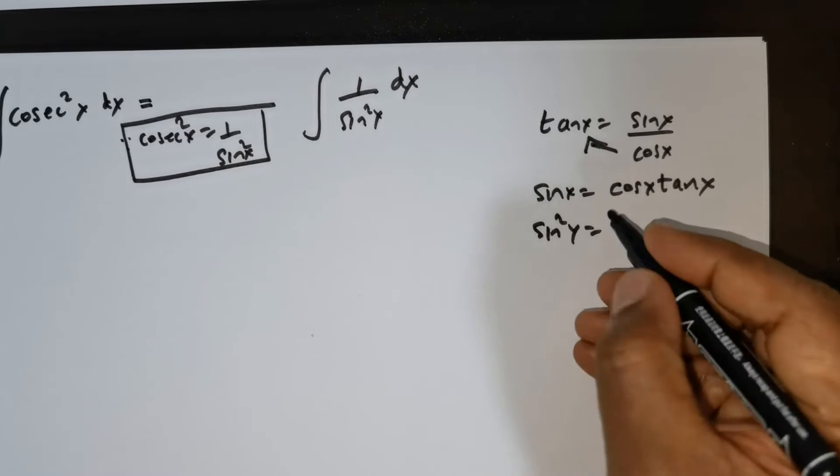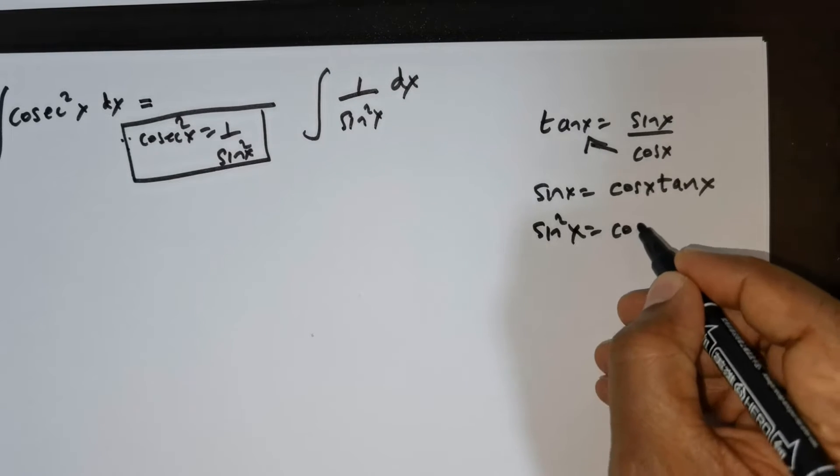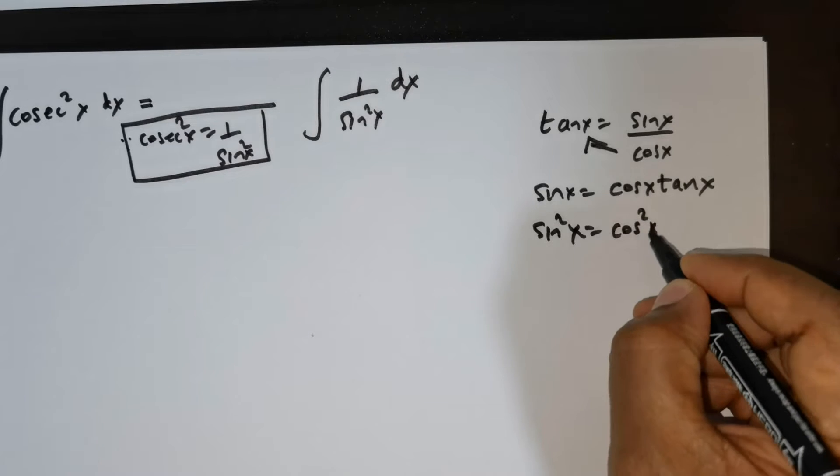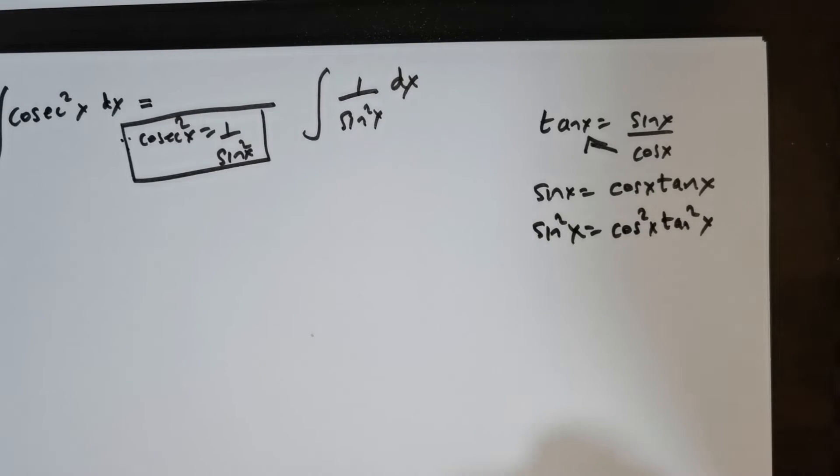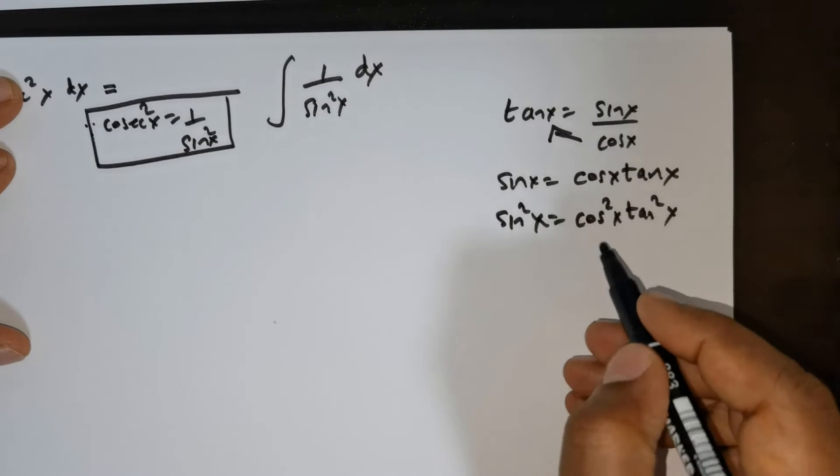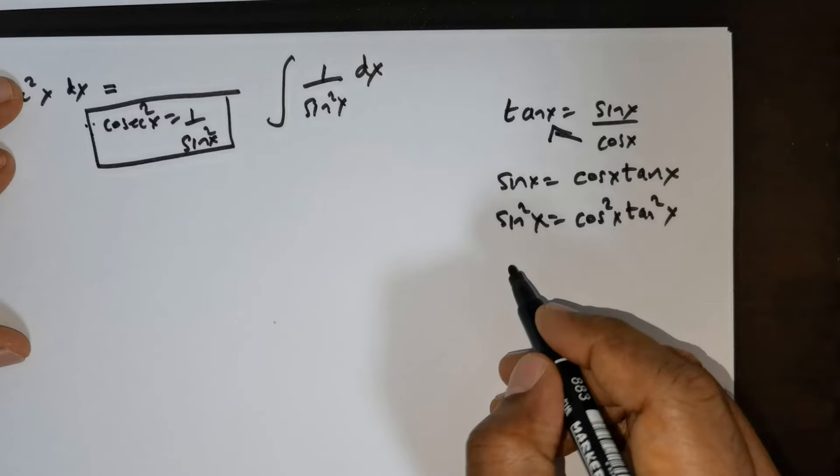So sine squared x is equal to cos squared x times tan squared x. Now there is a formula that we have to know here.